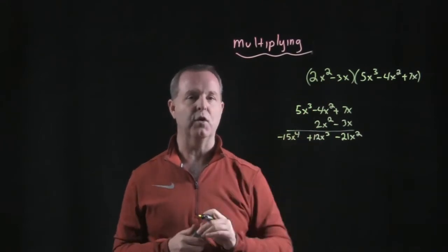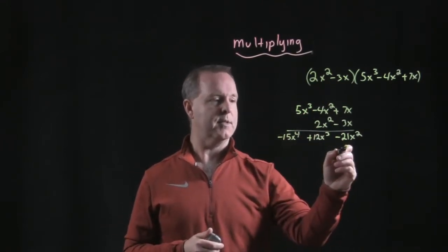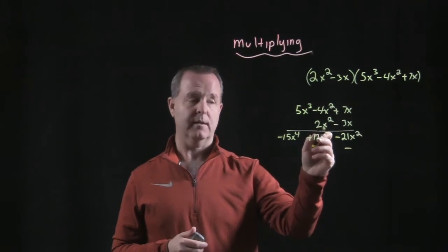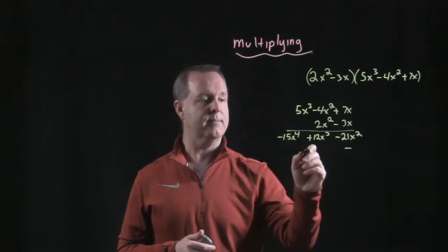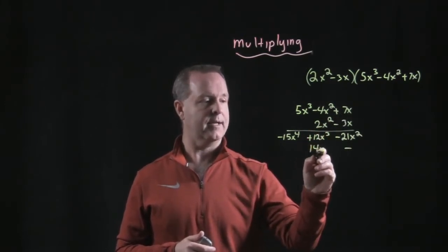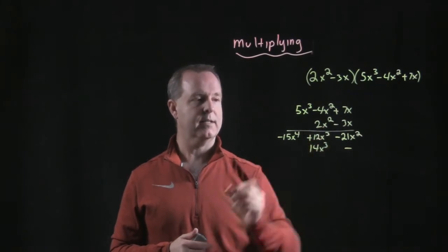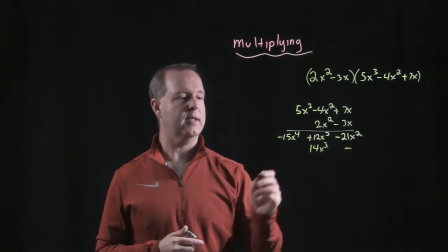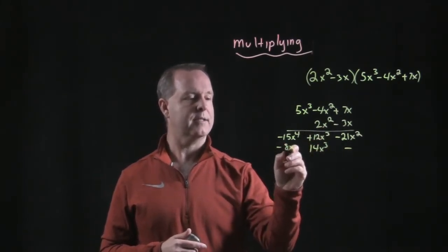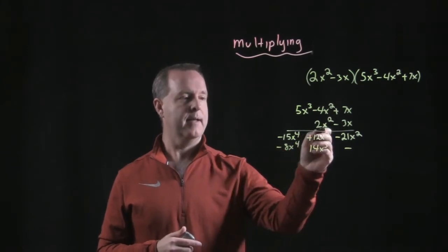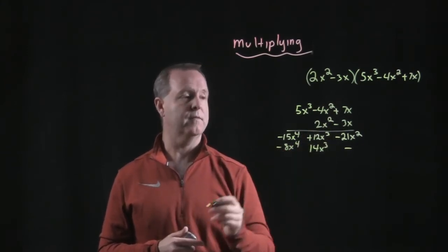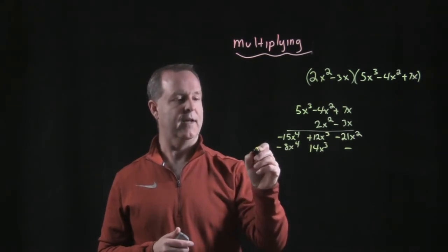Same process, this is just vertically stacking them. Let's skip this first spot. 2x squared times 7x gives me 14x cubed. 2x squared times negative 4x squared gives me negative 8x to the fourth. And then 2x squared times 5x cubed gives me 10x to the fifth.